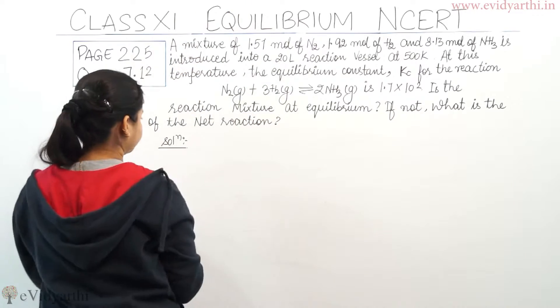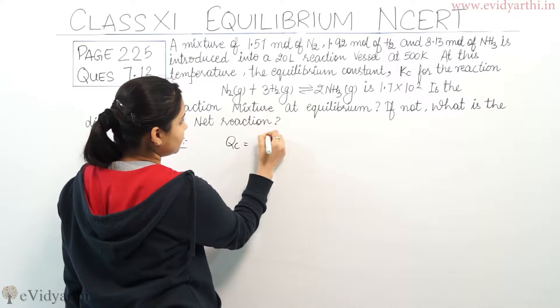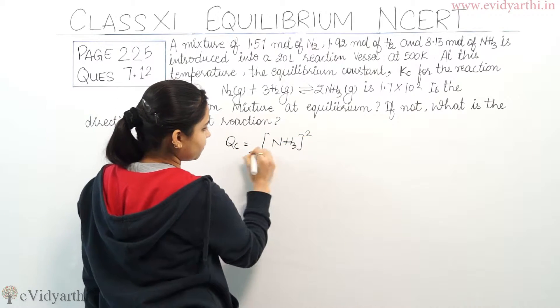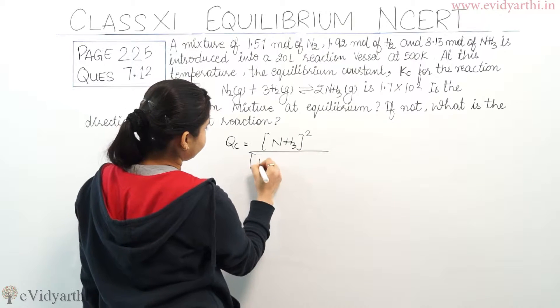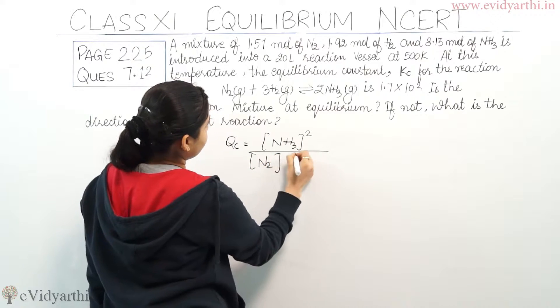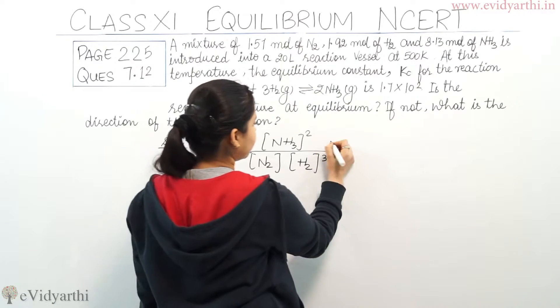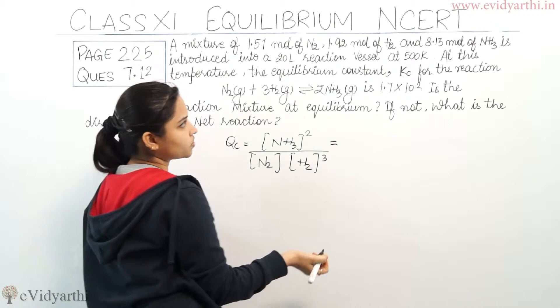So, reaction quotient Qc is equals to NH3 having stoichiometric coefficient 2 divided by N2 then H2 having stoichiometric coefficient 3. Now, substituting these values, NH3 ka concentration tha 8.13 divided by 20 square.